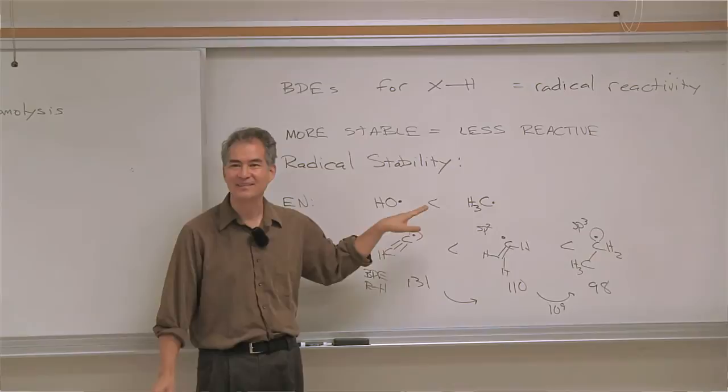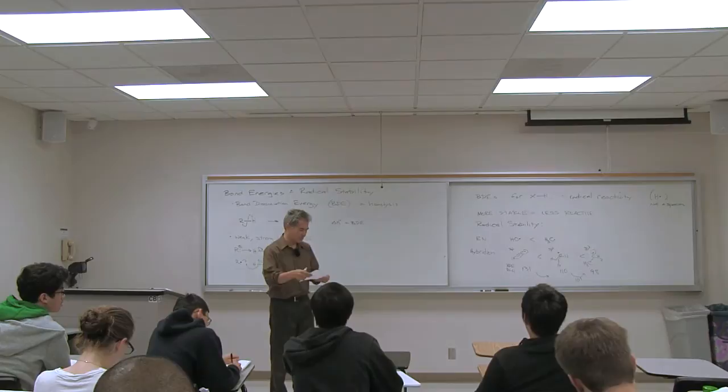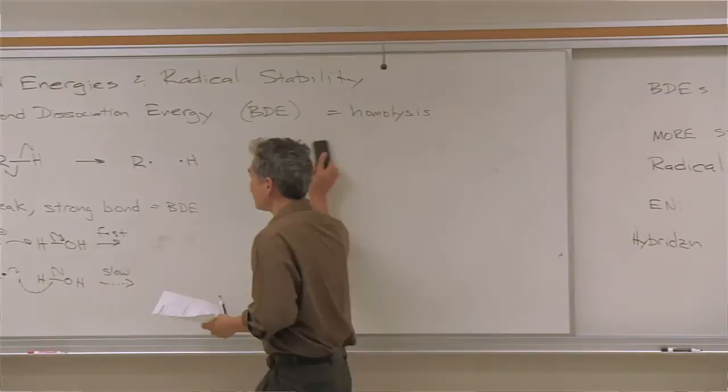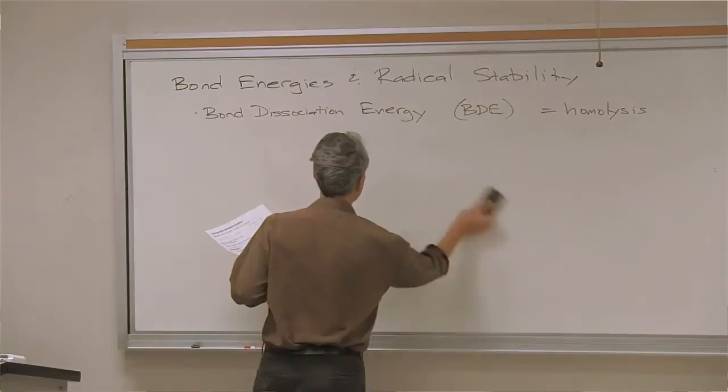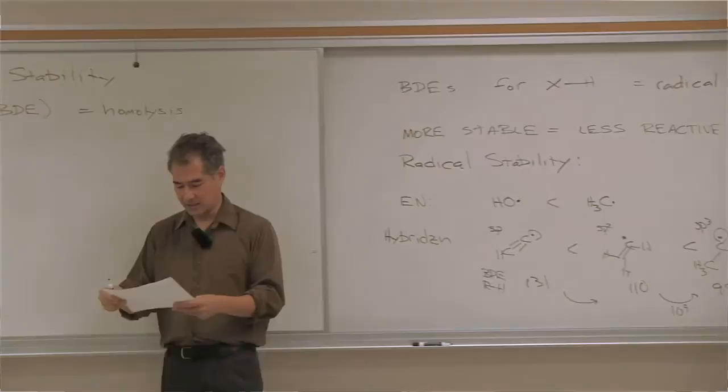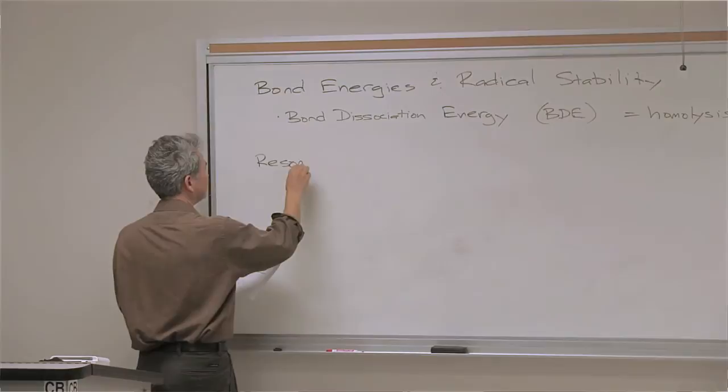You're not going to have reactions that have alkynyl radicals floating around — that kind of bond is so strong, there are no common organic chemistry reactions to make those. So that covers electronegativity and hybridization. Hybridization is phenomenally important — in fact more important than whether it's oxygen or carbon. The last factor is resonance and the ability of resonance to affect radical stability.